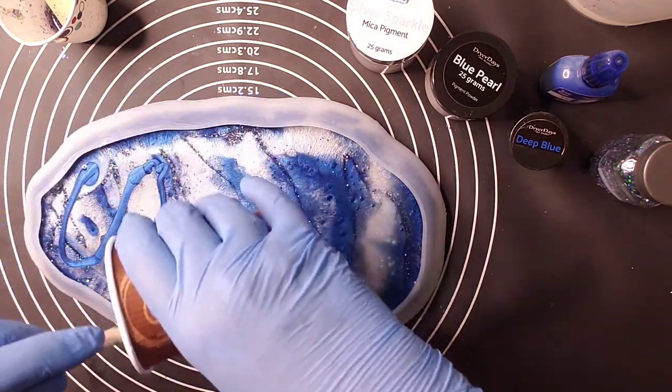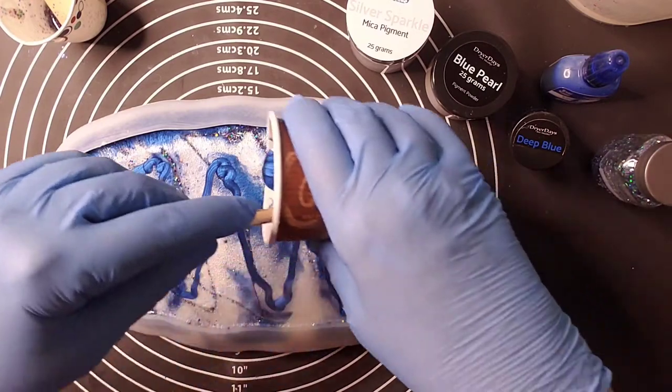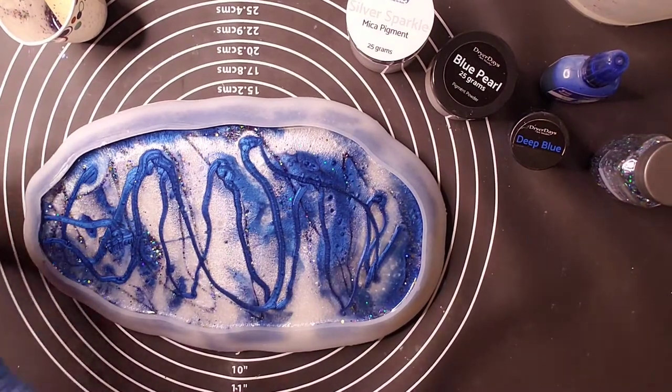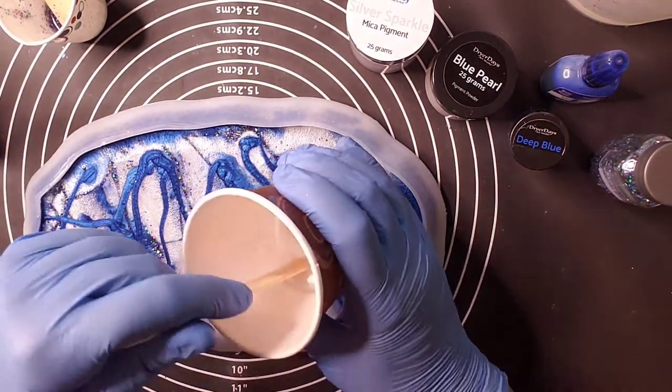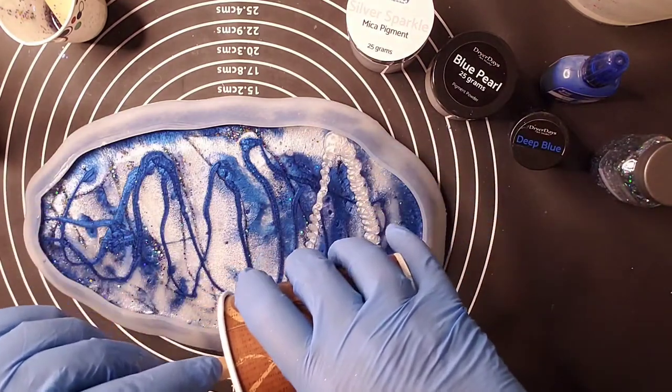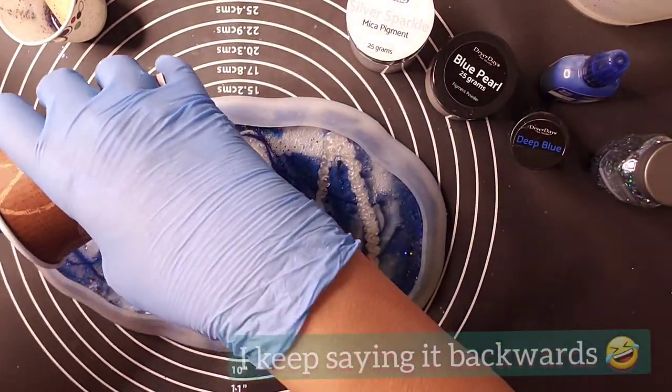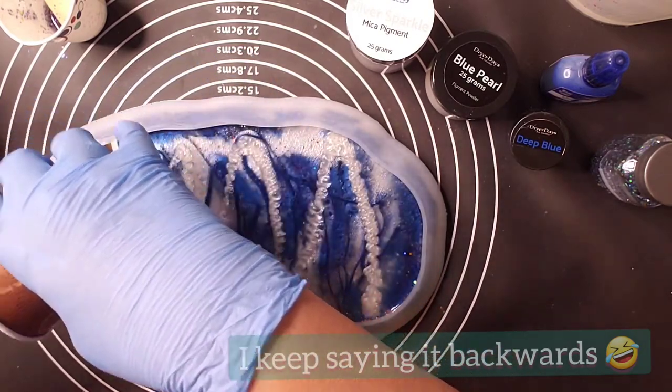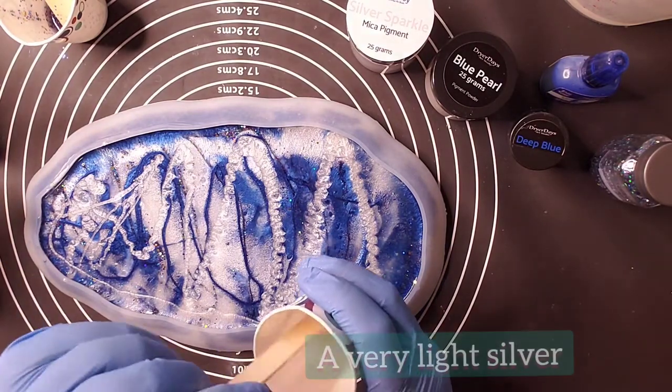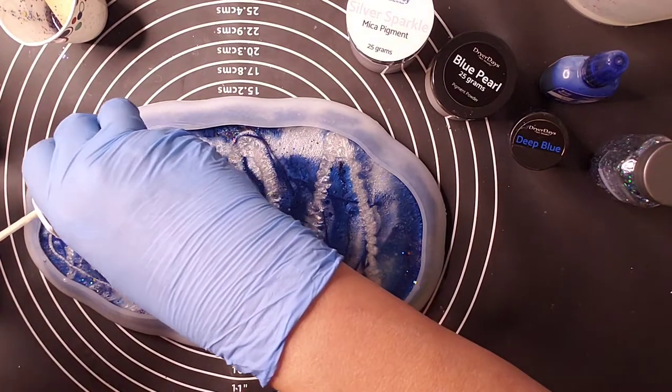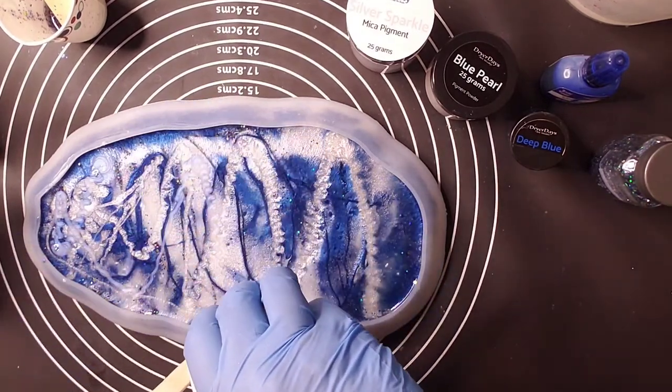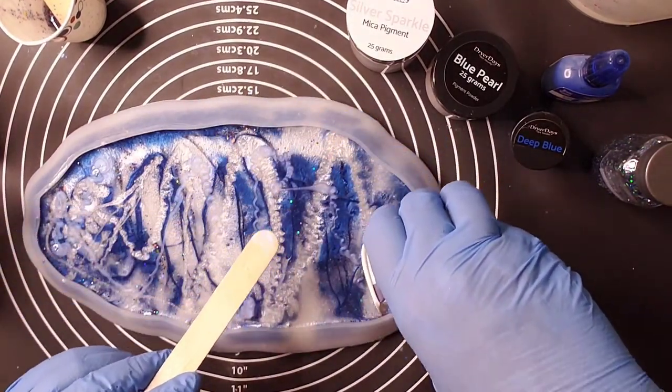And then again with my blue and my sparkle silver. As you can see in here, this sparkle silver, I don't want to say it's white. It's a darker white color, but very pretty, very very pretty. And I think it has worked really well together with the blue pearl pigment.